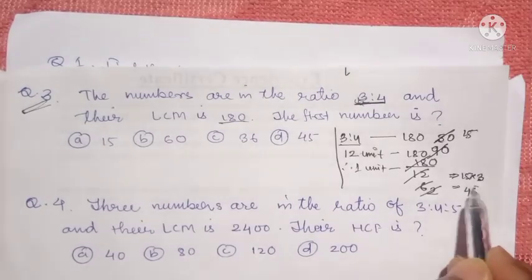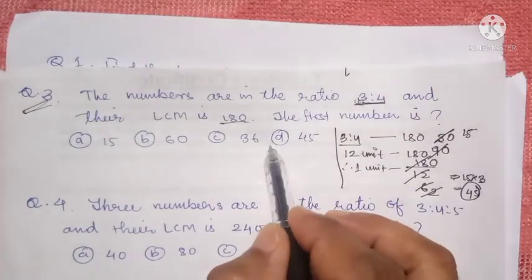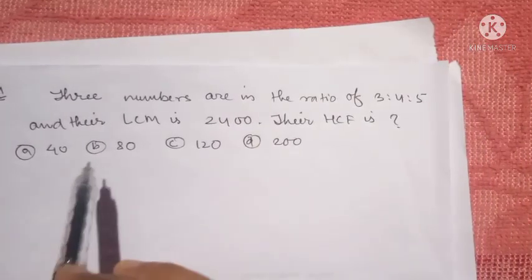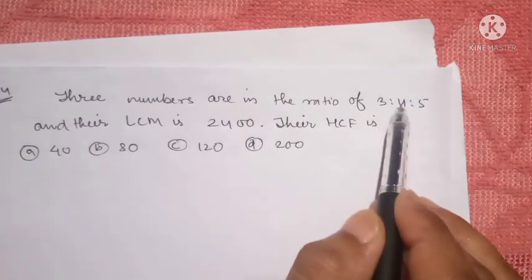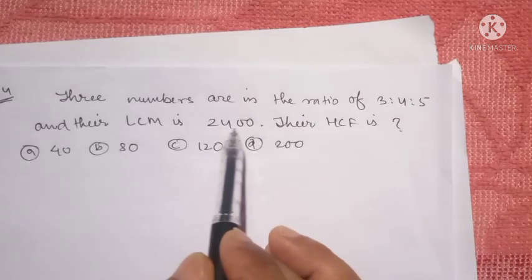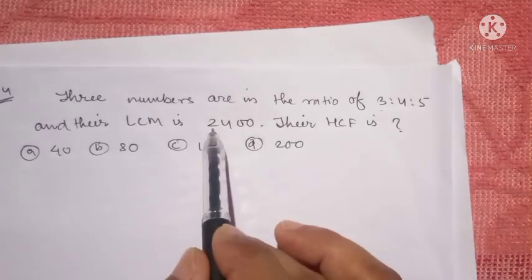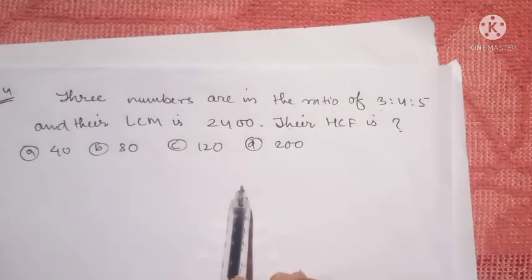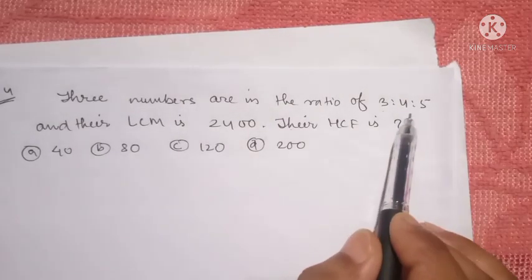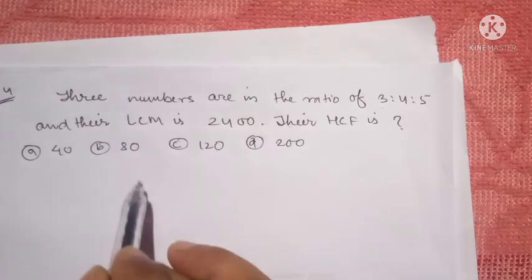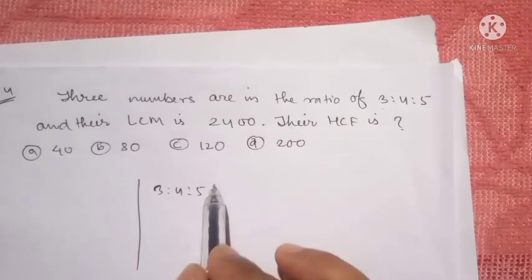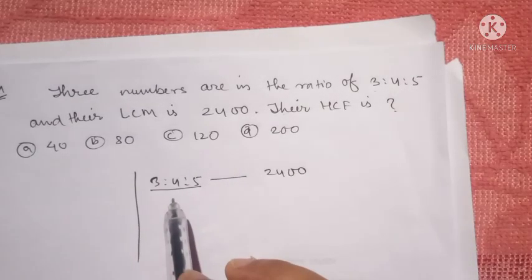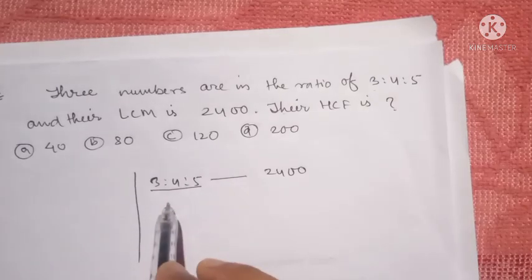If you want to ask questions: 3 numbers are in the ratio of 3 is to 4 is to 5 and their LCM is 2400. 3 is to 4 is to 5 and the LCM is 2400. The LCM is 2400.